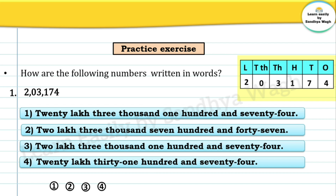Now read this number. Very good — two lakh three thousand one hundred and seventy four. So the correct option is option number three: two lakh three thousand one hundred and seventy four.